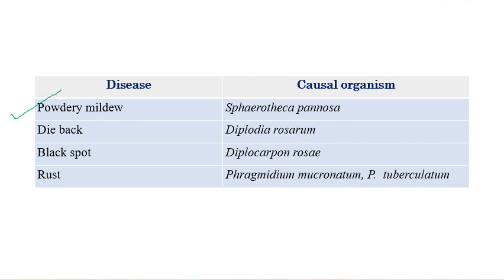The important diseases are: powdery mildew, which is caused by Sphaerotheca pannosa; dieback, caused by Diplodia rosarum; black spot, caused by Diplocarpon rosae; and rust, which is caused by Phragmidium mucronatum or Phragmidium tuberculatum.